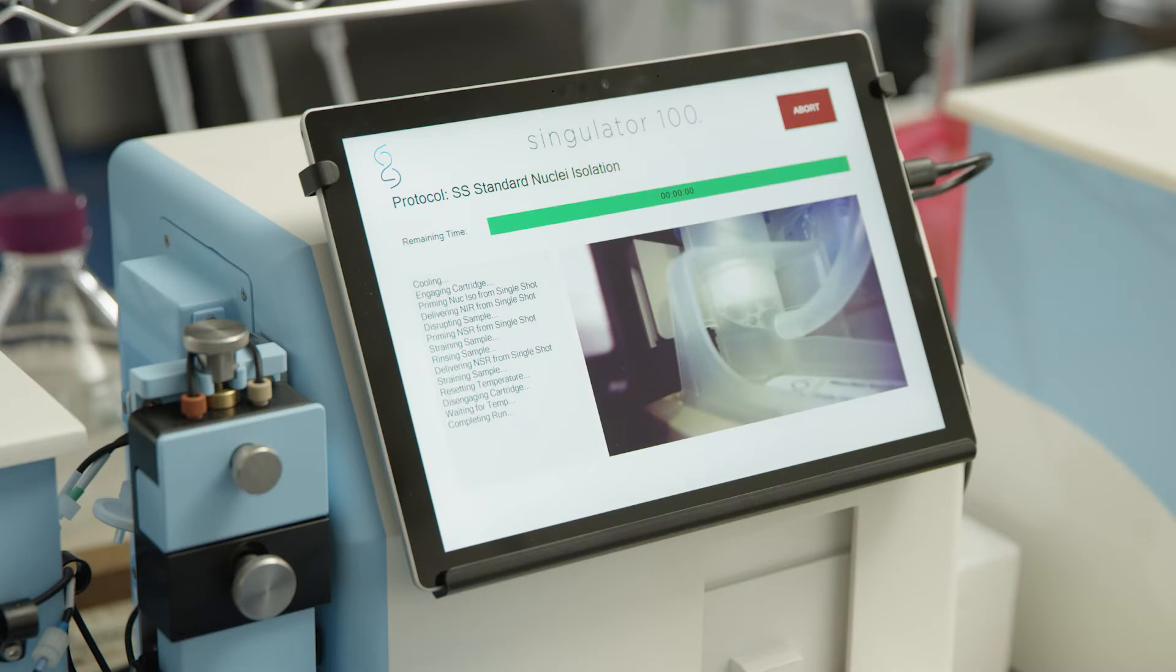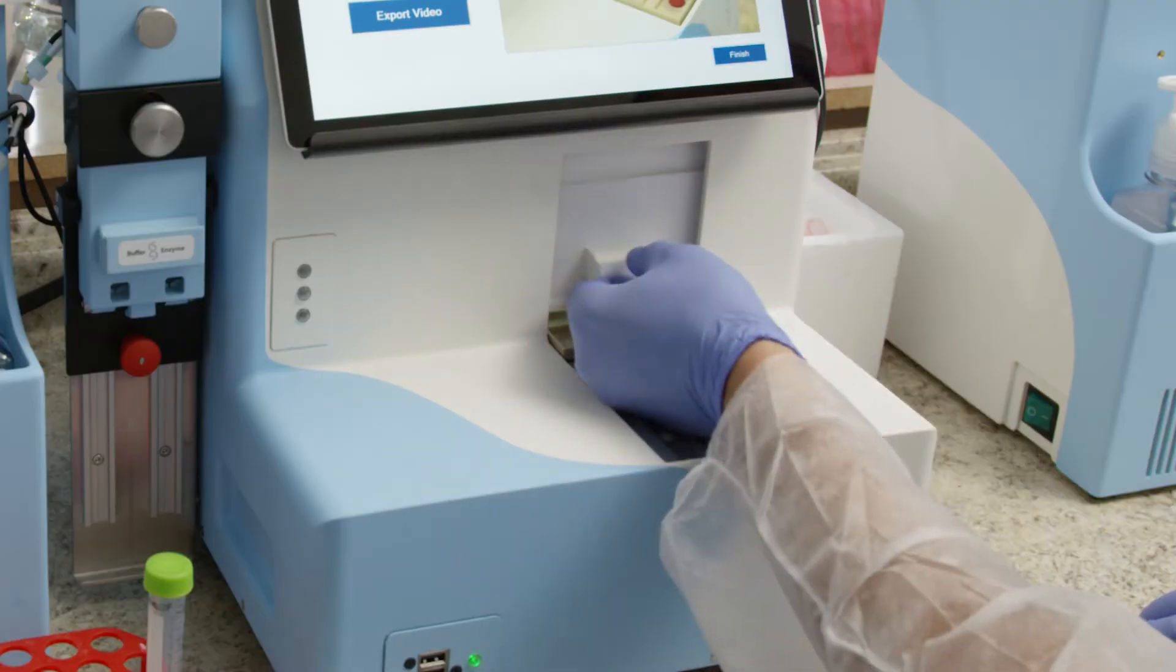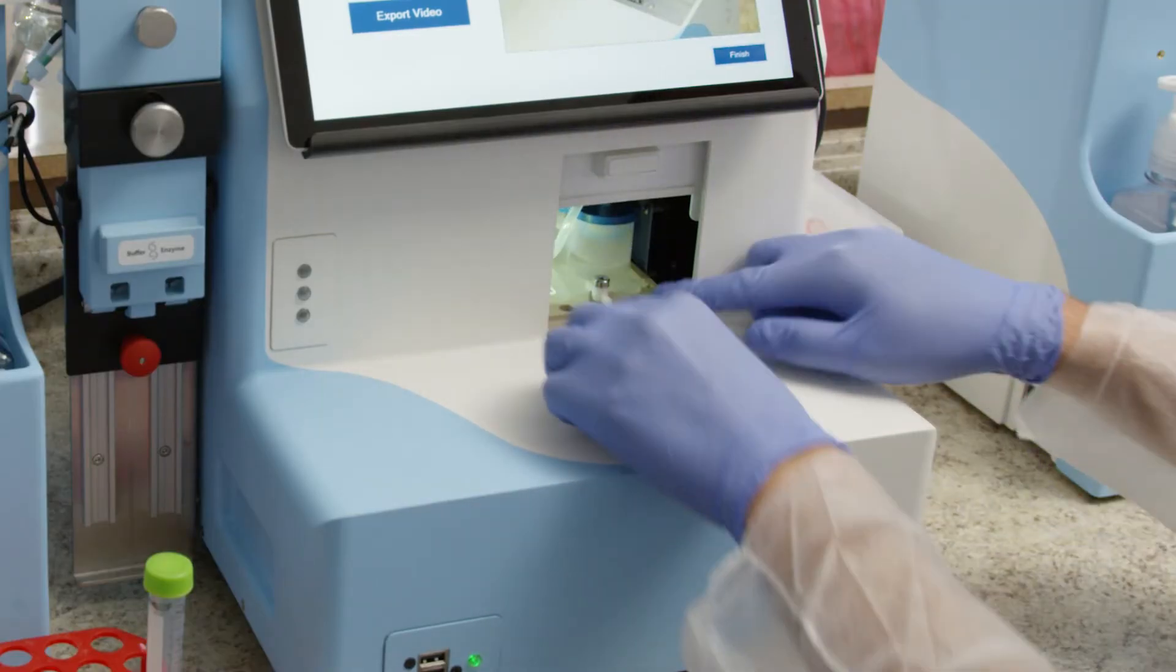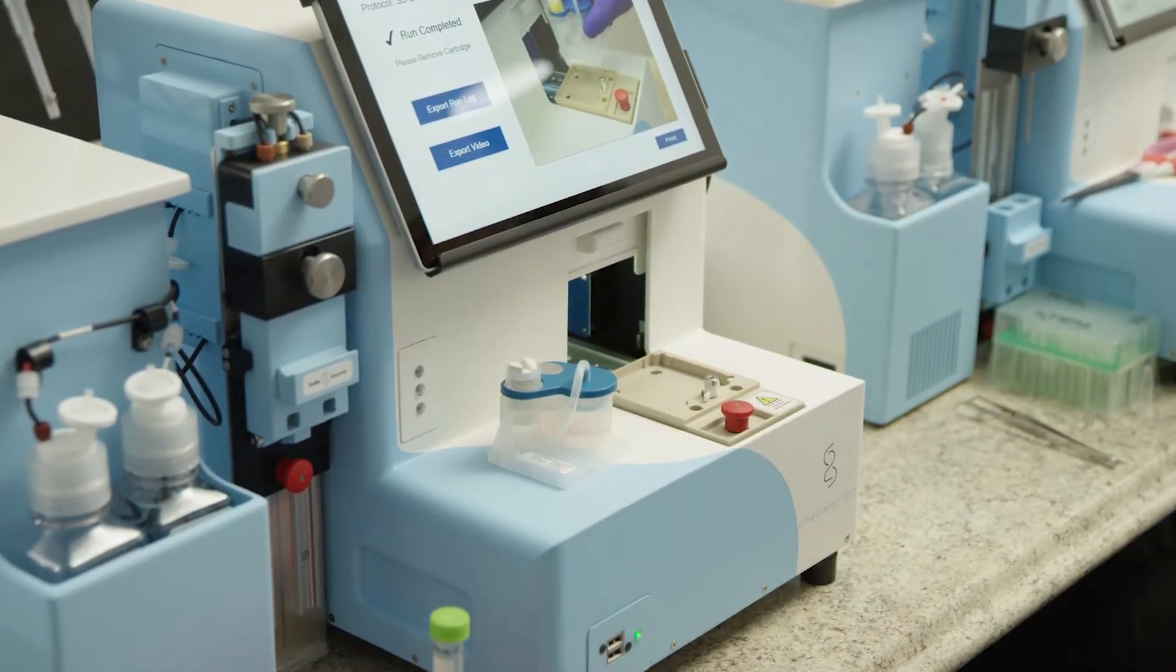The Singulator software will provide a notification when a run is complete. Open the door, lift the red knob to release the stage and slide the stage out of the instrument. Turn the rear cartridge lock to release the cartridge and lift the cartridge off the stage.